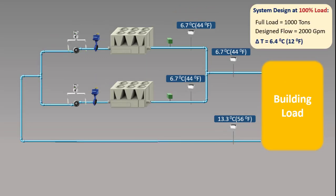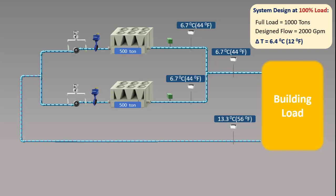Now let's consider that this system has a full load of 1000 tons with a design flow of 2000 GPM and a design delta T of 6.4°C (12°F). At full load, each chiller is supplying 500 tons of cooling capacity and each pump is supplying 1000 GPM, so total flow is 2000 GPM to the building and delta T is 12°F or 6.4°C. Chilled water systems run at designed full load for a very small amount of time — usually about 1% of their lifetime.